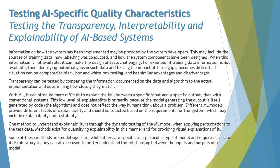With machine learning, it can often be more difficult to explain the link between a specific input and a specific output than with conventional systems. The low level of explainability is primarily because the model generating the output is itself generated by the algorithm and does not reflect the way humans think about a problem. Different ML models provide different levels of explainability.